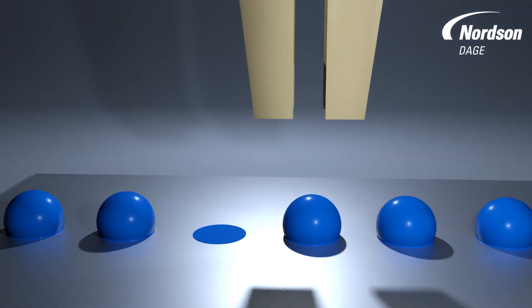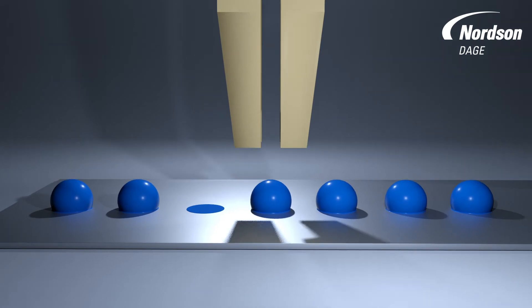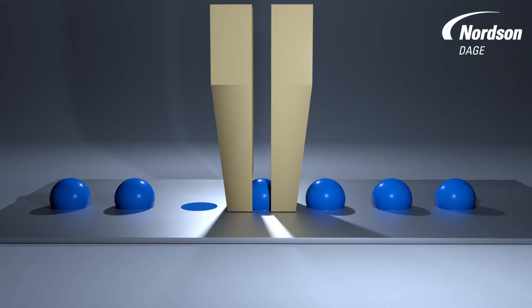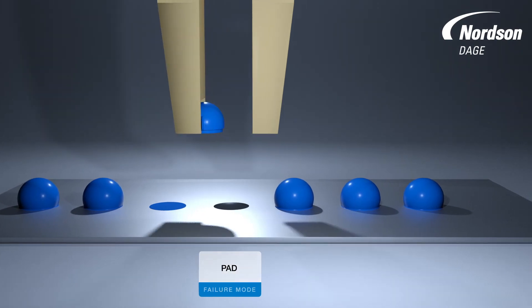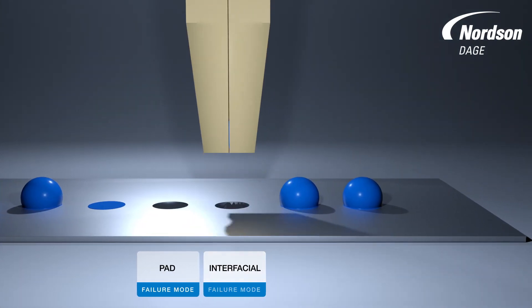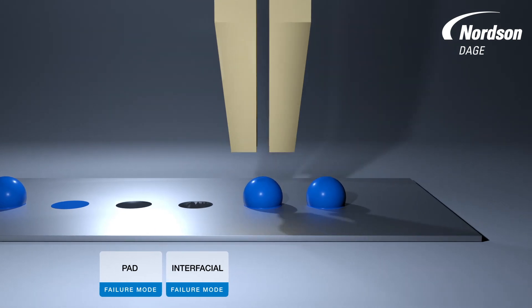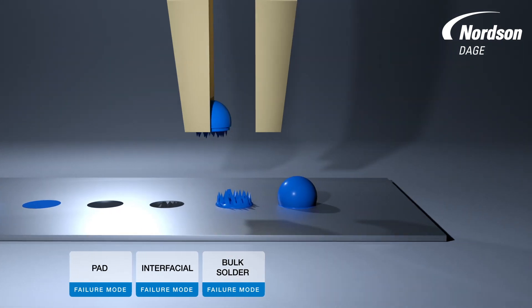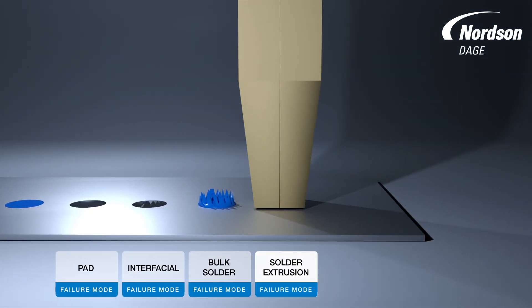Our bond testers can complete multiple test patterns unaided and automatically image each test site to identify which failure mode has occurred. Here we show pad failure, interfacial failure, bulk solder failure, and solder extrusion.